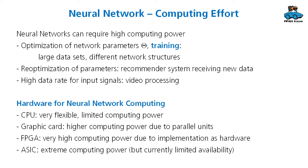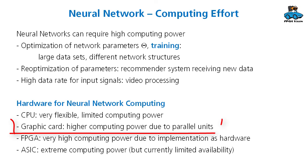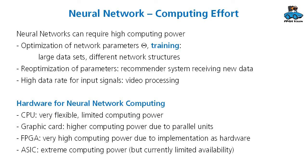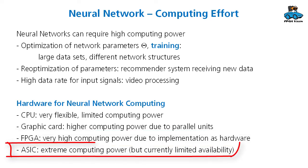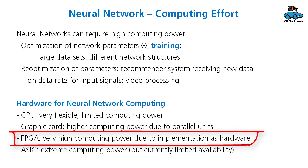There are several options for implementation. In your computer you have a CPU, which is very flexible but has limited computing power. More computing power is available in a graphics card because of its parallel units. An FPGA has even more computing power because you implement the machine learning algorithm directly as hardware. Extreme computing power can be achieved using specialized ASICs, but these are only available to a limited number of developers at a very high price. We will look at FPGAs as an available option to achieve very high computing power. In the next video we will look at an application and develop parameters for a neural network with Octave.